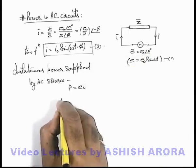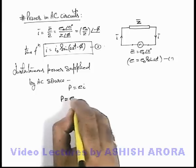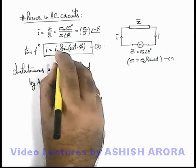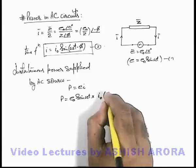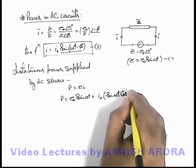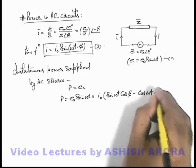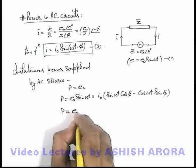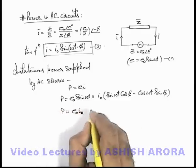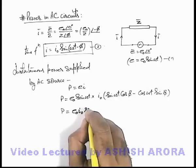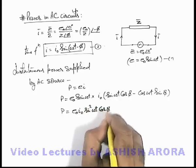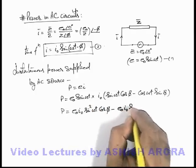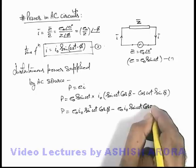So it'll be e times i. If we substitute the values, e can be taken as e-not sine omega t, multiplied by current we can write as i-not. I just open this trigonometric factor, this will be sine omega t cos phi minus cos omega t sine phi. So the value of instantaneous power we get e-not i-not, and here the first factor is sine square omega t cos phi, minus the second factor is e-not i-not sine omega t cos omega t sine phi.